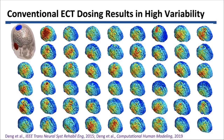We don't account for any of that with conventional ECT dosing. Basically all of these patients received the same dose of right unilateral ECT, but their brains saw something different — the electric field strength and distribution is quite different across all of these patients.